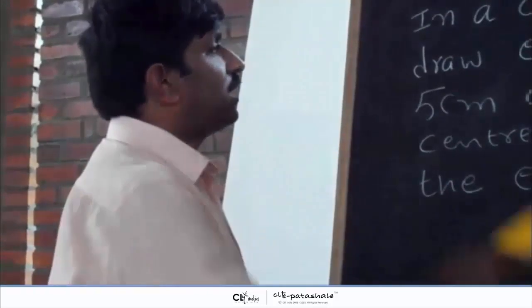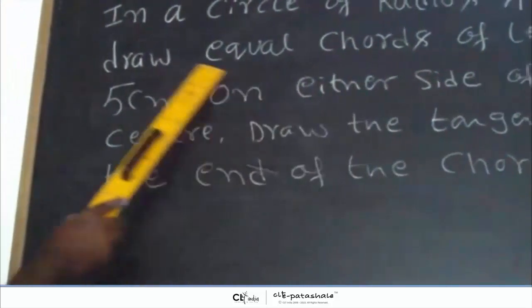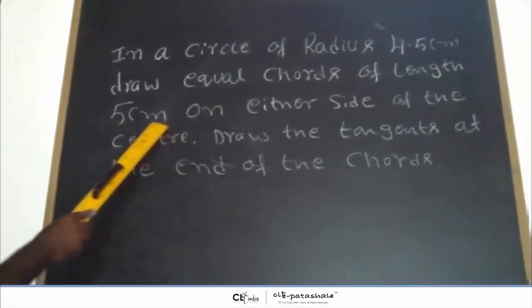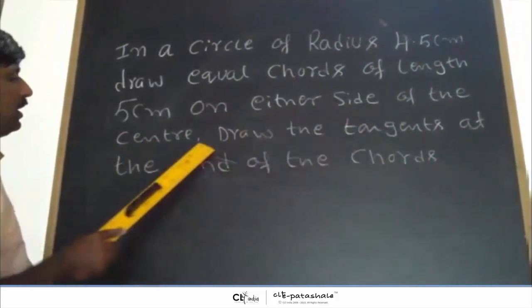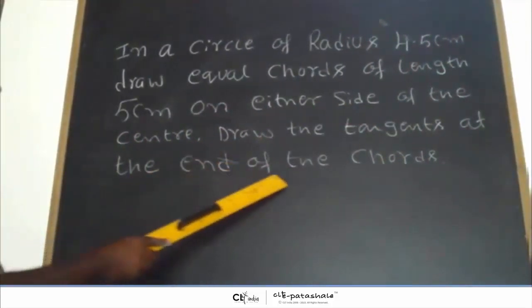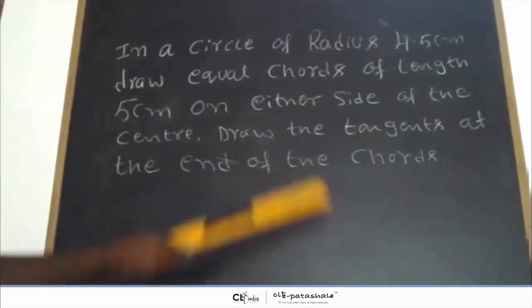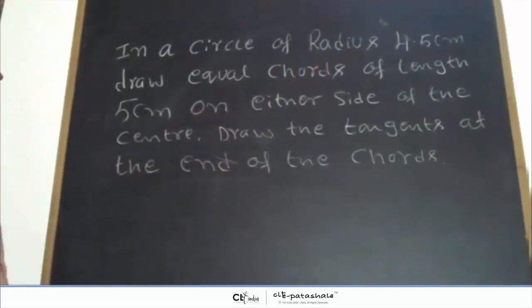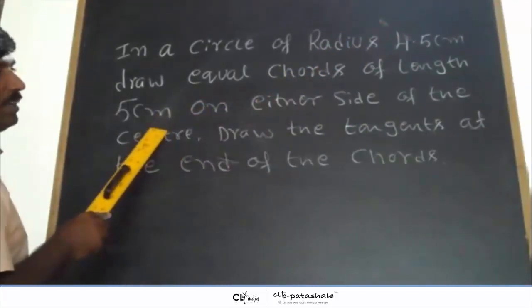In a circle of radius 4.5 cm, draw equal chords of length 5 cm on either side of the circle and draw the tangents at the ends of the chord. The radius of the circle is given as 4.5 cm and the length of each chord is given as 5 cm.